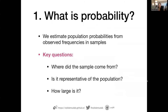Conclusions on what is probability: it's a numerical measure of how likely an event is. We estimate population probabilities from observed frequencies in a sample. The questions we always want to ask are: where is the sample coming from, is the sample representative of the population, and how large is it?